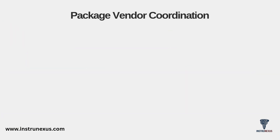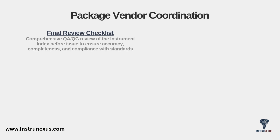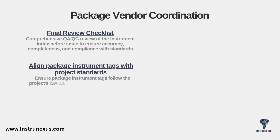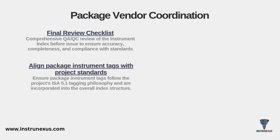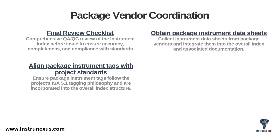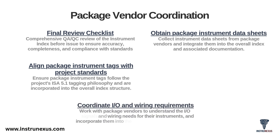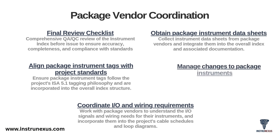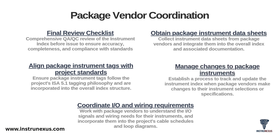Package vendor coordination is one of the most challenging parts of this job. You must coordinate with these vendors early — preferably during the FEED stage — to understand their instrument tagging and data requirements. Next, you must align their instrument tags with your project standards, often by incorporating them into your overall index structure with a prefix. You must obtain all package instrument data sheets and integrate them into your main documentation set. You also have to coordinate all their I/O and wiring requirements and get that information into your project's cable schedules and loop diagrams. Finally, you must have a process to manage changes when the vendor updates their specifications.